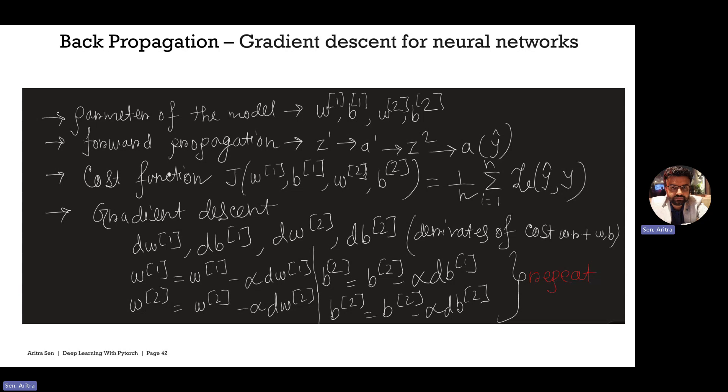Once you have a good understanding of gradient descent from linear regression and logistic regression, the math of backpropagation for neural networks is much easier. That's why I went through a series of videos to make you understand how the math works for linear and logistic regression. Now let's talk about how this works for neural networks.